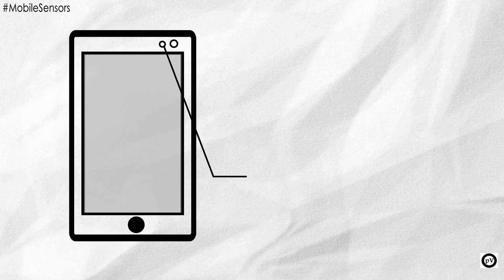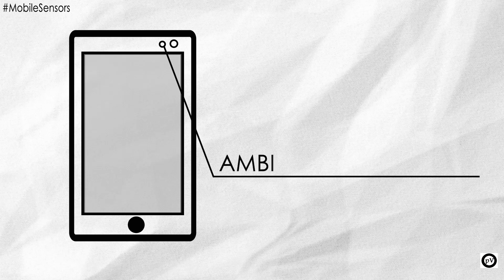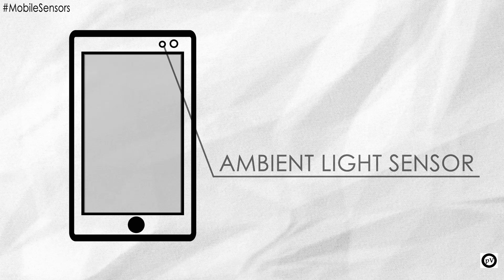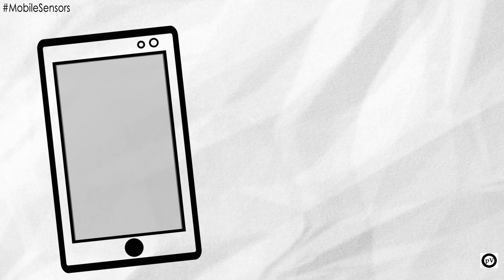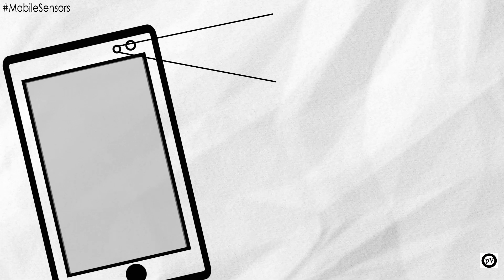You can find the ambient light sensor at the front of your mobile phone, normally at the top near your front camera. The photodiode present in the light sensor measures the intensity of the light in the surroundings of the mobile phone, and these readings are sent to the CPU, which adjusts the screen brightness accordingly.